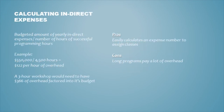Let's take a closer look at indirect expenses. The first way to calculate indirect expense is to divide your total yearly indirect expense by the number of successfully programmed hours. For example, if you had $550,000 of indirect expense divided by 4,500 hours of successful programming, you would end up with $122 per hour of overhead. That means a three-hour workshop would need to have a $366 expense factored into its budget for overhead.